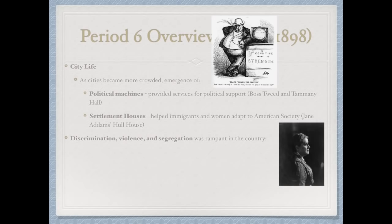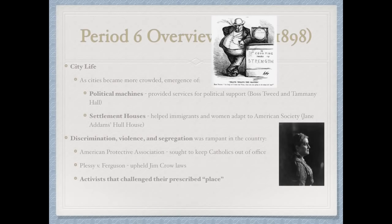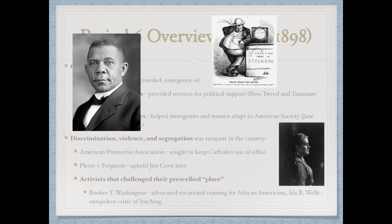Discrimination, violence, and segregation remained rampant, especially in the South. Plessy v. Ferguson upheld Jim Crow laws and made separate but equal facilities constitutional. Activists began to challenge their prescribed place in society — Booker T. Washington advocated vocational training for African Americans, and Ida B. Wells was an outspoken critic of lynching, drawing attention to societal problems.